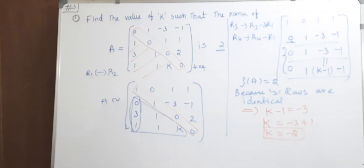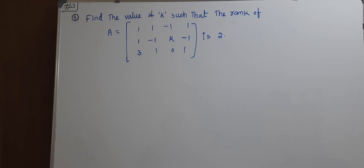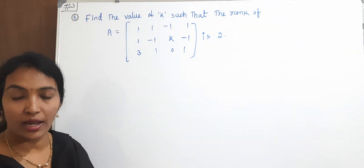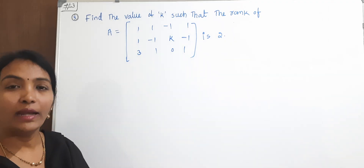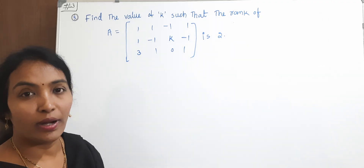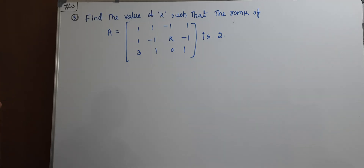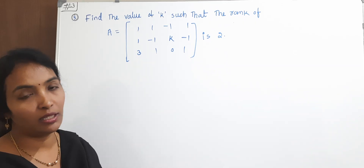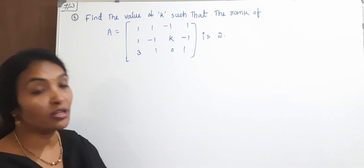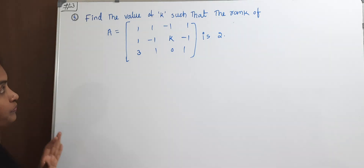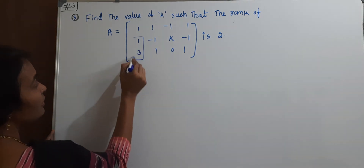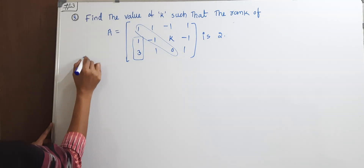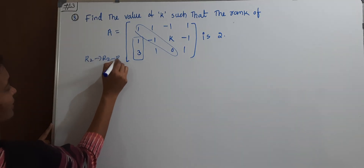Next problem — our third problem. Find the value of k such that the rank of A is 2. Each problem uses a different approach. Here, using the first element, we make elements below the principal diagonal zero. We apply R2 → R2 minus R1, and R3 → R3 minus 3R1.